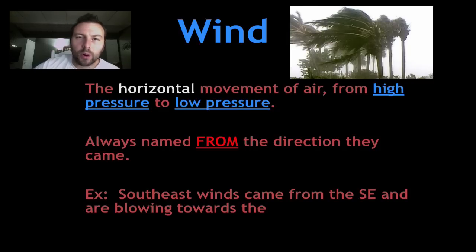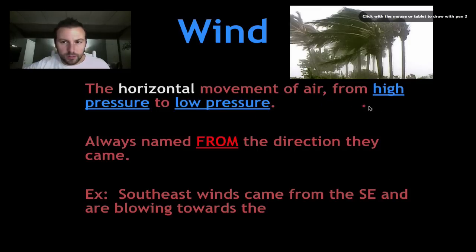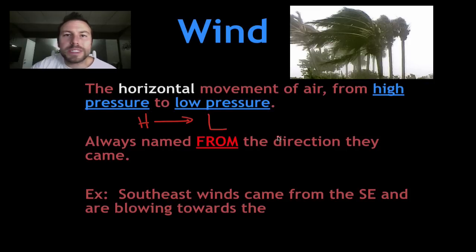What happens is we have a movement of horizontal air created from the differences in pressure of the air. The winds, or the air, moves from high pressure to low pressure. You can see here, we go from high pressure to low pressure. Winds are also always named from where they come from. So wind coming from the east is known as an east wind. Wind coming from the north is known as a north wind.